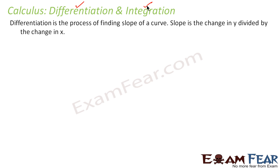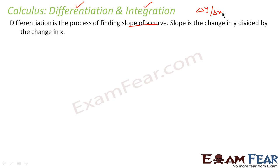Differentiation is nothing but the process of finding the slope of a curve. If you have a curve and you want to find its slope, you can use differentiation. Slope is nothing but change in y with respect to change in x — that is dy/dx. This is called slope.